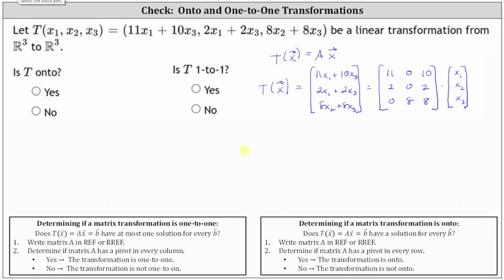So now we know that matrix A is the three by three matrix, where the first row again is 11, 0, 10. The second row is 2, 0, 2. And the third row is 0, 8, 8.